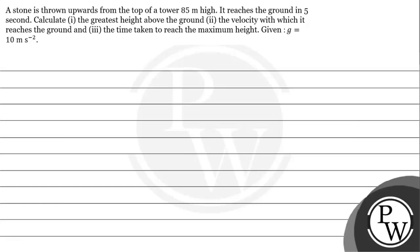Let's read the given question. A stone is thrown upwards from the top of a tower 85 meters high. It reaches the ground in 5 seconds. We need to calculate: first, the greatest height above the ground; second, the velocity with which it reaches the ground; and third, the time taken to reach the maximum height. Given: acceleration due to gravity is 10 meters per second square.